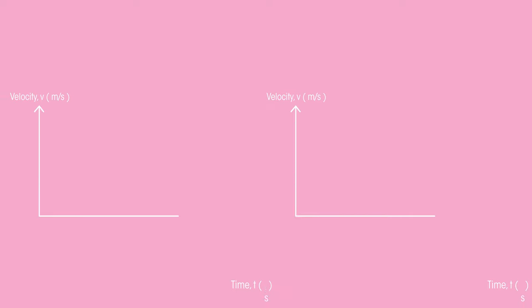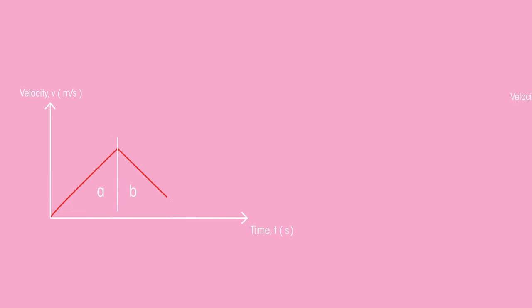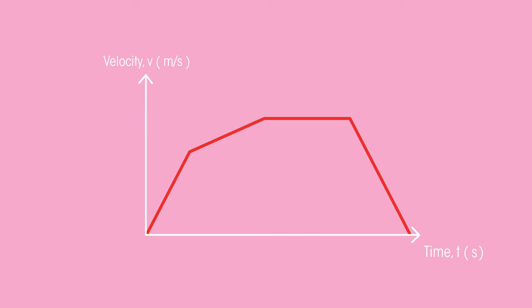For most velocity time graphs, splitting up the area will be relatively obvious. However, you might come across some more complicated plots. Splitting up an area like this will be less obvious.